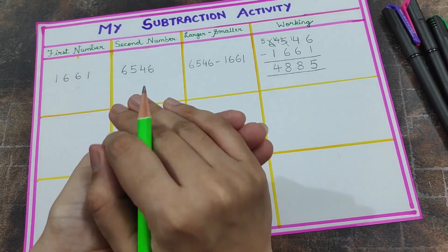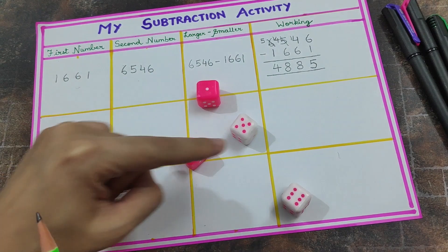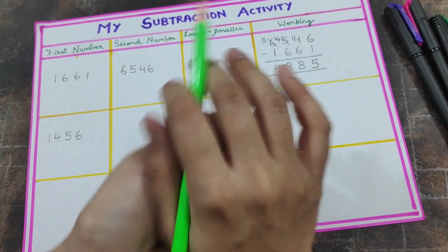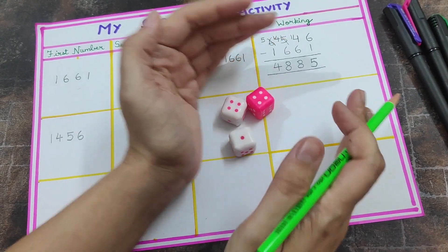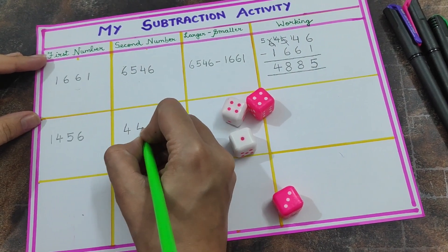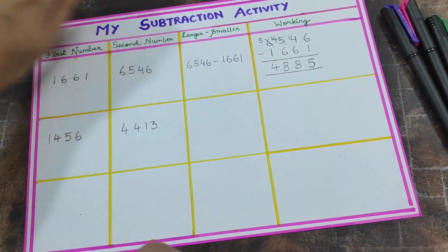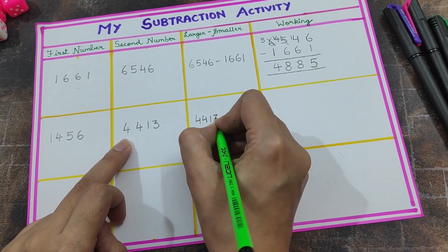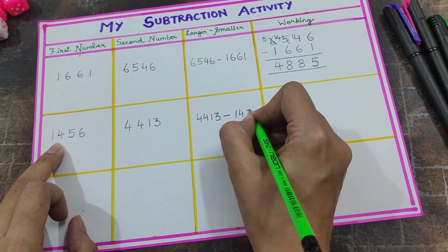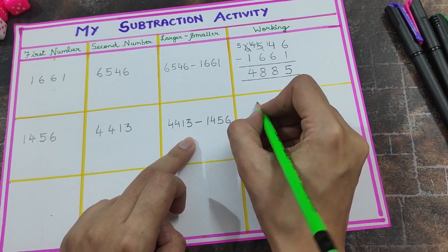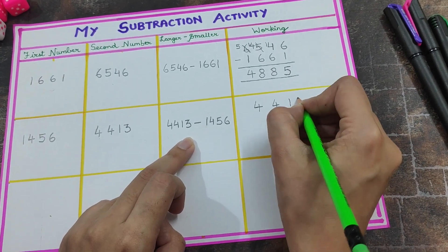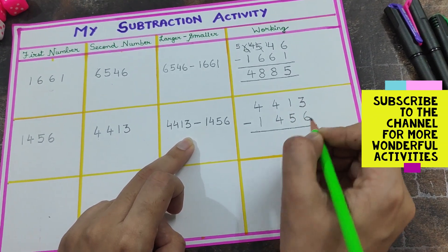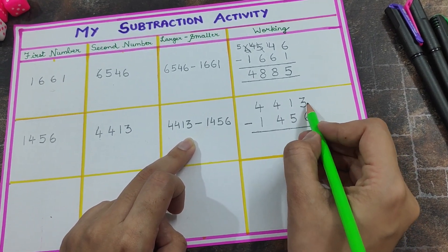Now let's do the second row. Rolling the dice again — the first number is one, four, five, six: 1456, one thousand four hundred and fifty-six. Rolling again: four, four, one, three — 4413, four thousand four hundred and thirteen. Compare the two: 4413 is larger, so we write 4413 minus 1456 in the working area.